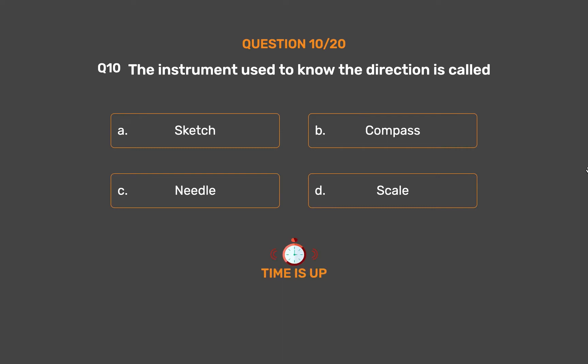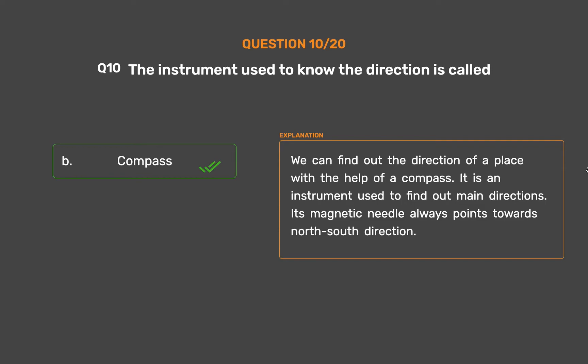The correct answer is Option B: Compass. We can find out the direction of a place with the help of a compass. It is an instrument used to find out main directions. Its magnetic needle always points towards the north-south direction.